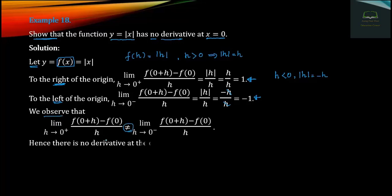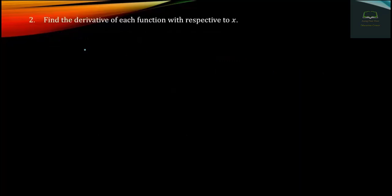That means the right-hand and left-hand limits at x equals zero are not equal — the right-hand limit is 1 and the left-hand limit is negative 1. Therefore the function f of x equals modulus of x has no derivative at x equals zero.